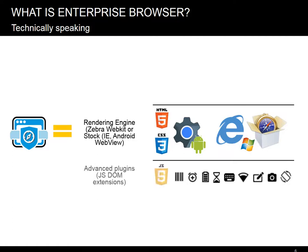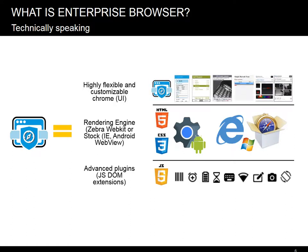Second, we have added plugins that provide access to advanced device features that normal browsers cannot access — barcode scanner and camera integration, signature capture, printing, and much more. We then exposed these features through JavaScript DOM extensions, so they are easily accessed from a web app. Third, we have put a highly flexible and customizable Chrome browser UI, or shell if you like, on top, which allows you to configure custom indicators, full screen, lockdown, and multiple tabs to ensure that the browser best matches your application needs. Finally, we put in a lot of logging and debugging tools and optimizations to aid developers.